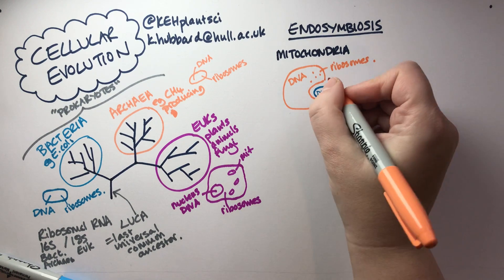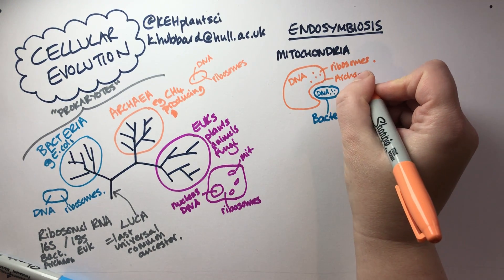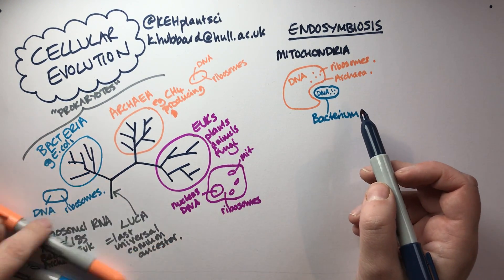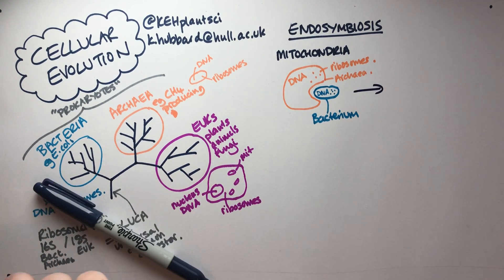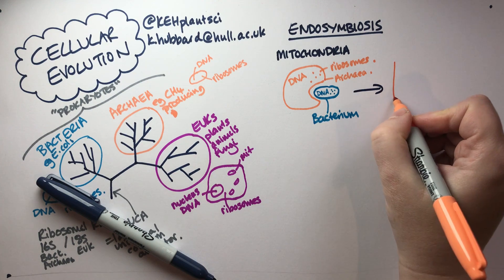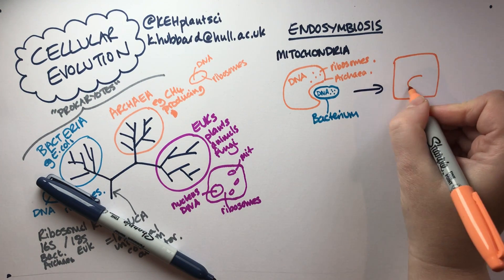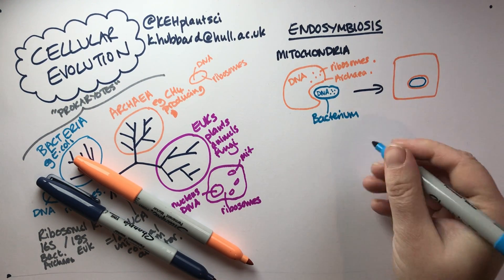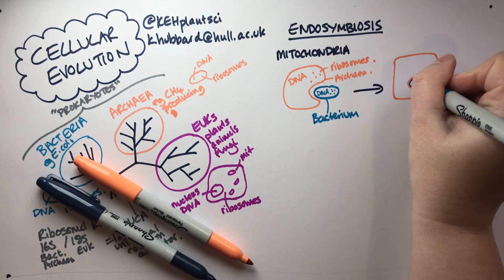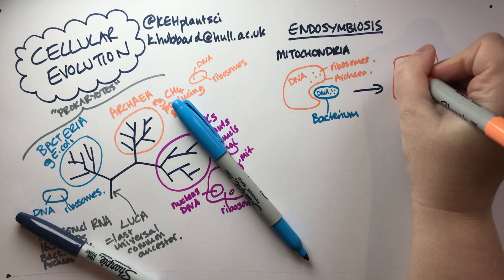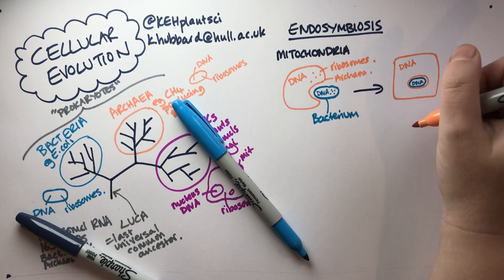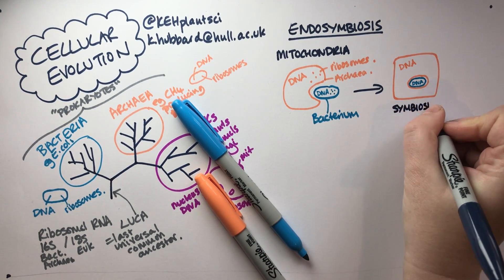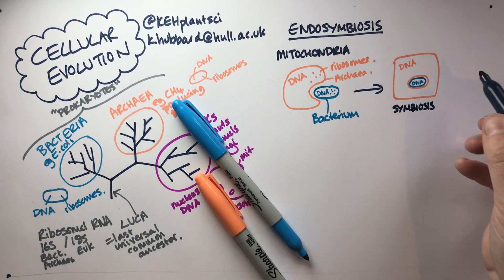We think that engulfing cell was probably an archaeon. When that happened, rather than what would usually happen — the bacterium simply being eaten — what happened in this case is that the bacterium survived and started living inside the cell of the archaeon. So the bacterium still has its own DNA and its own genome and ribosomes, and the outside cell still has its own DNA and ribosomes, creating a stable symbiosis where the bacterium lives inside the cell more permanently.